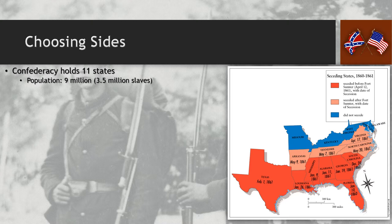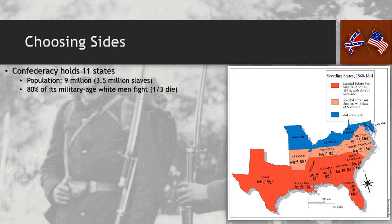Three and a half million of the Confederacy's population are slaves. The Confederacy specifically states that white males are its citizens — women are not counted as citizens and don't have the right to vote, and African Americans, free or otherwise, are not considered members of the Confederacy. About 80% of its military-age white men end up fighting in the conflict. Both sides eventually institute a military draft out of desperation, and it's estimated that about one-third of those who fight end up dying.